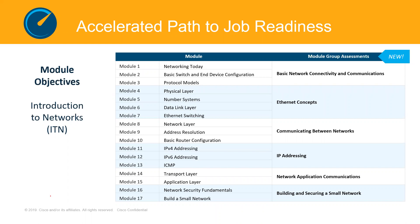Within the course we're going to look at Module 1, which talks about networking today. Modules 1, 2 and 3 are within the same group of understanding: basic connectivity and communication. Module 2 covers basic switch and end device configuration. Module 3 covers protocol models — we have reference models, OSI models — these give us the fundamentals for basic connectivity and communication.